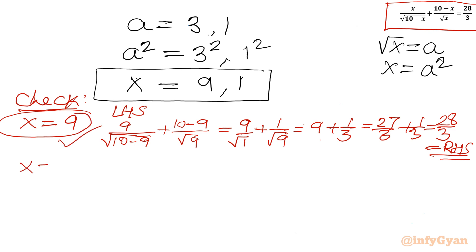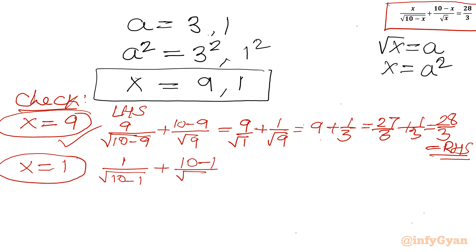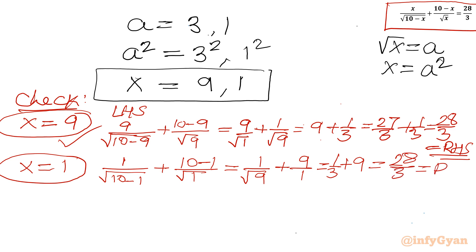Now checking x = 1: LHS = 1/√(10−1) + (10−1)/√1 = 1/√9 + 9/1 = 1/3 + 9 = 1/3 + 27/3 = 28/3 = RHS. ✓ Both solutions x = 9 and x = 1 are verified.